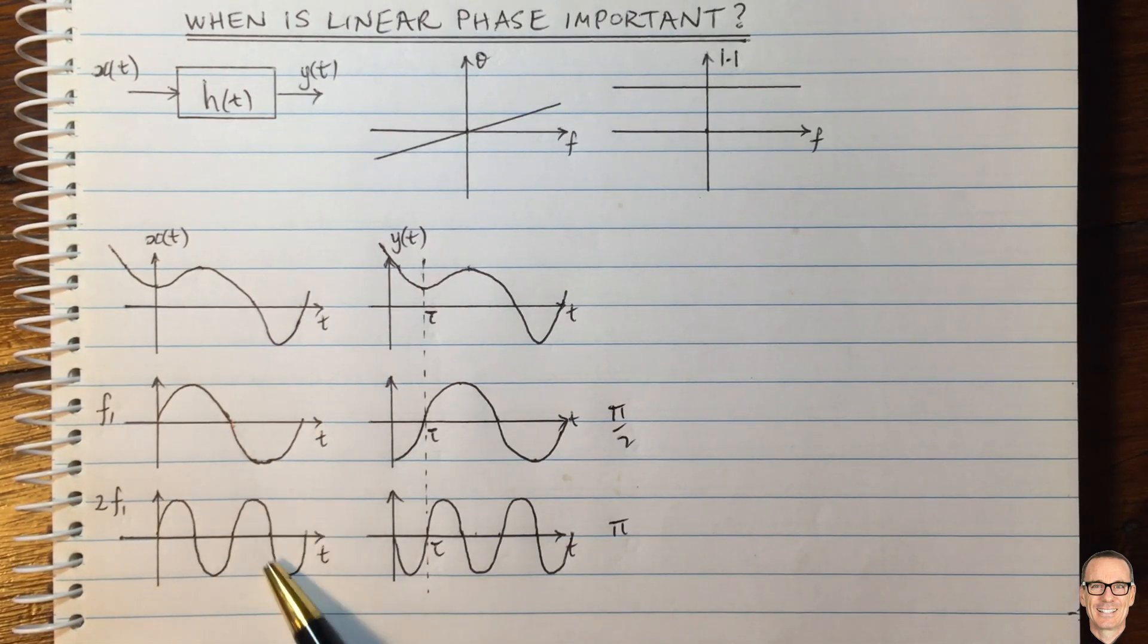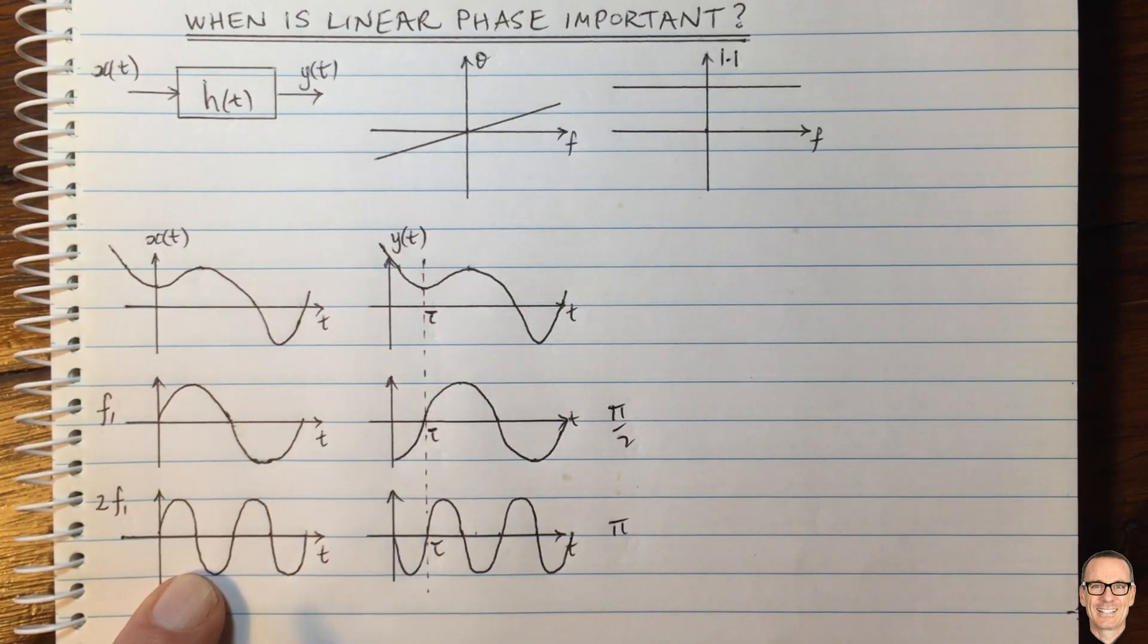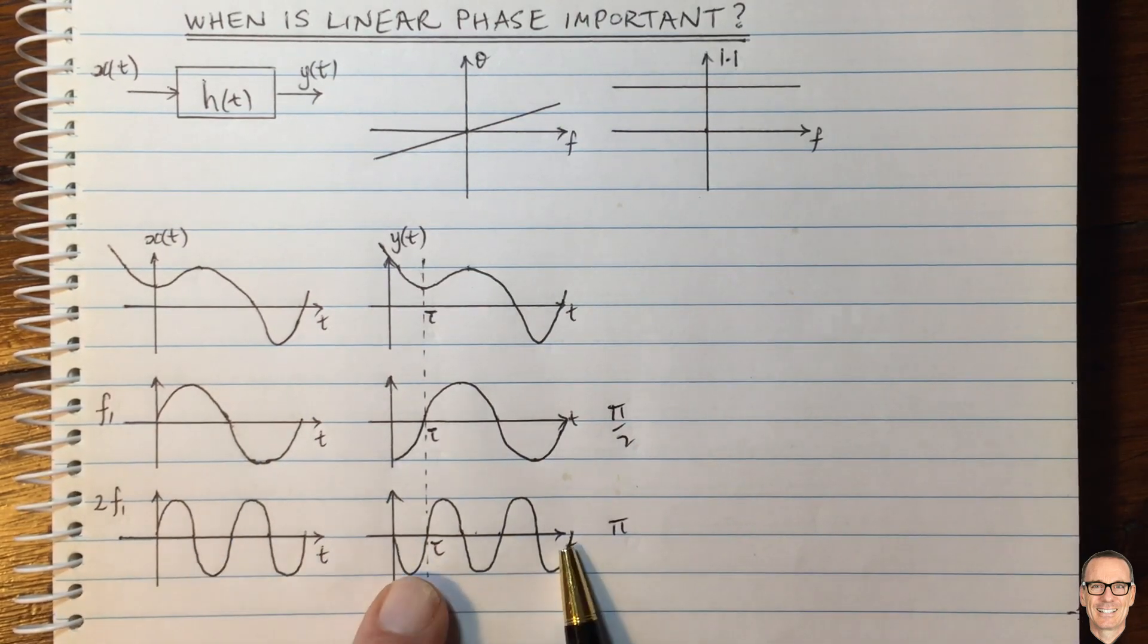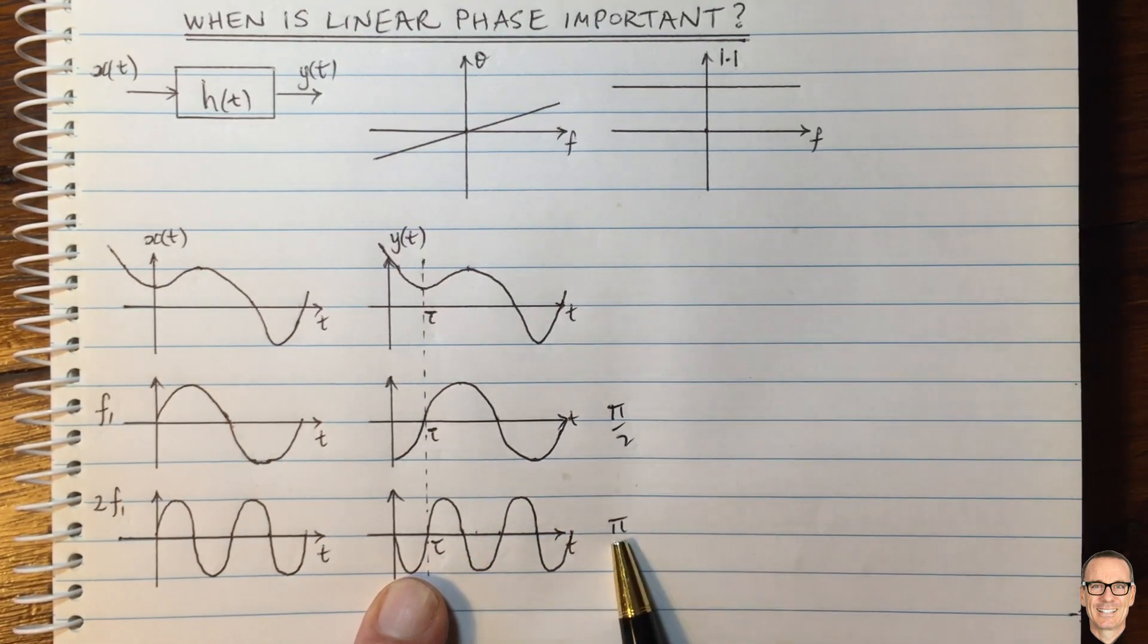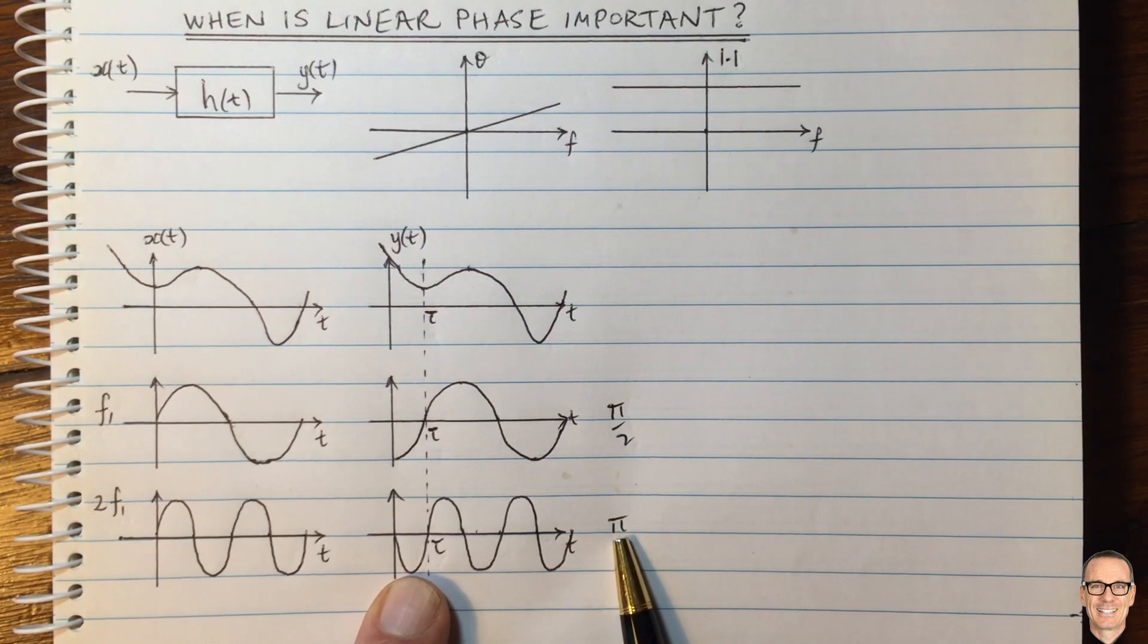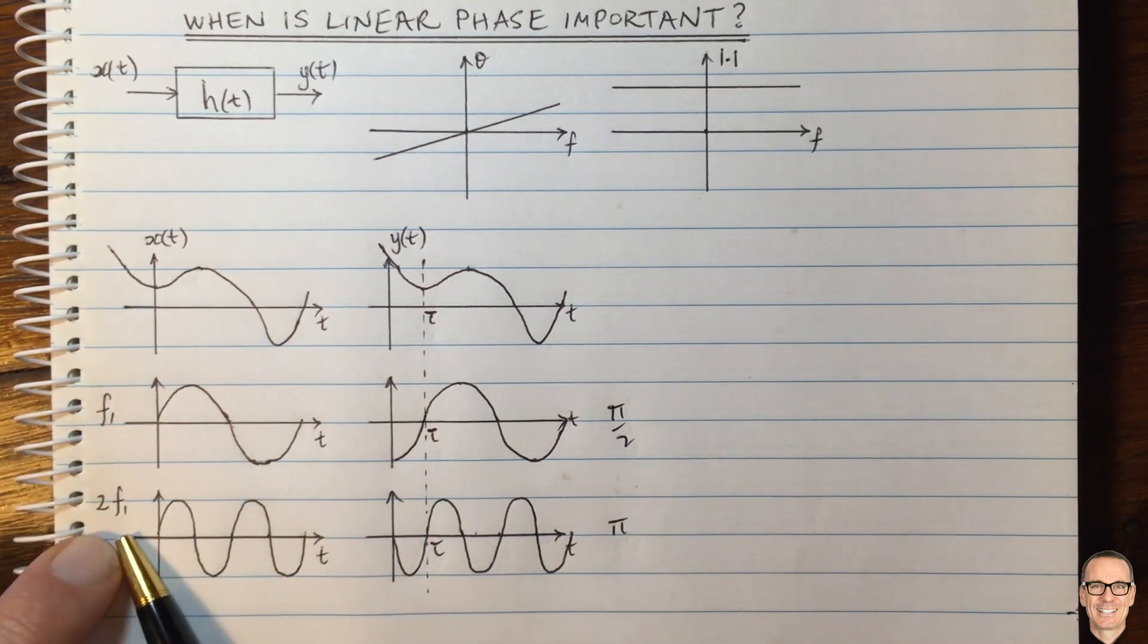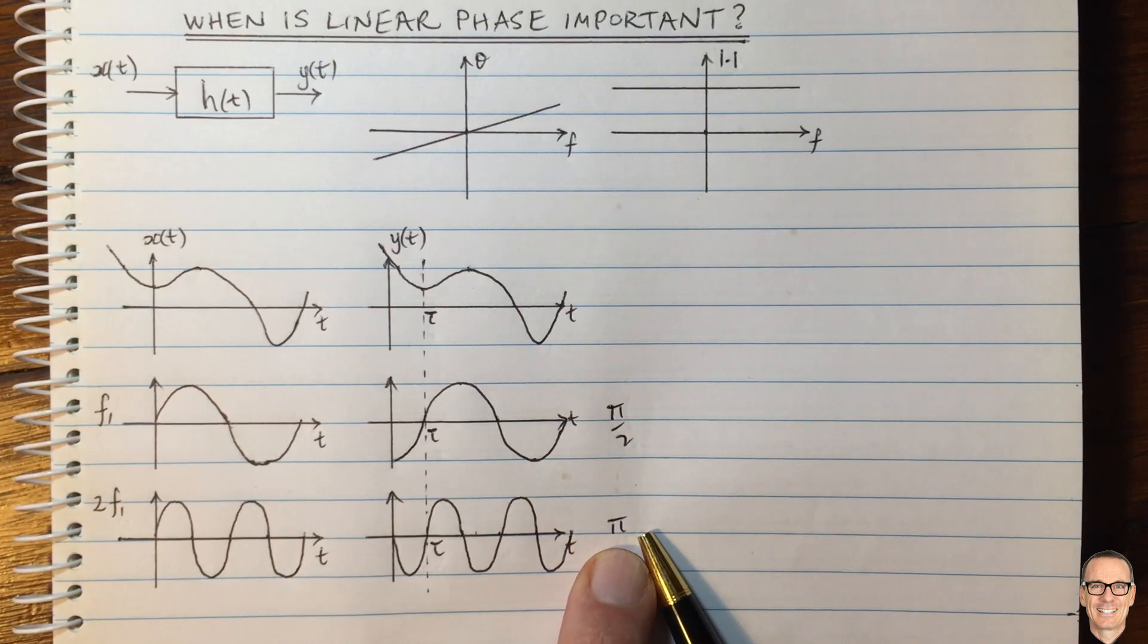This undergoes two cycles where this did every one. Now this one you can see when it's delayed by Tor, the same time period of delay, it corresponds to a phase offset of pi. This was double the frequency, this was double the phase.